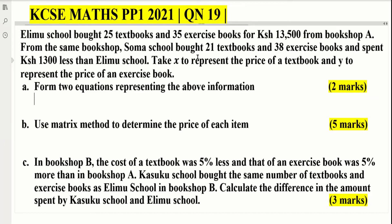Elamu School bought 25 textbooks and 35 exercise books for 13,500 Kenyan shillings from Bookshop A. From the same bookshop, Soma School bought 21 textbooks and 38 exercise books and spent 1,300 Kenyan shillings less than Elamu School. Take X to represent the price of a textbook and Y to represent the price of an exercise book.